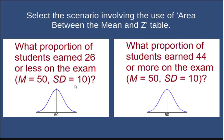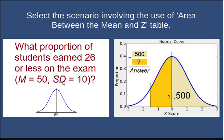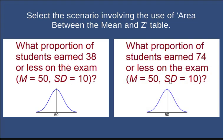There are two different tables out there: area between the mean and z, and area beyond z.